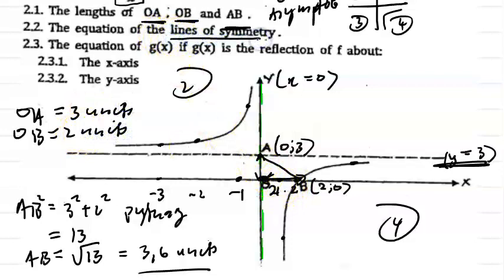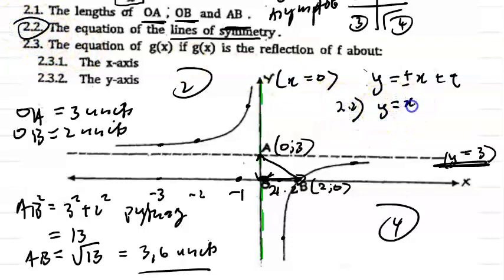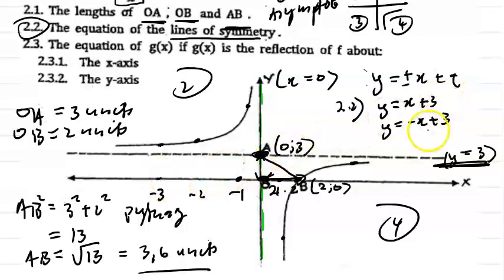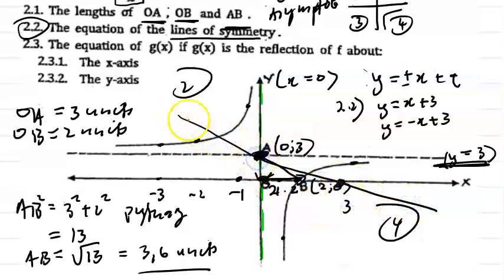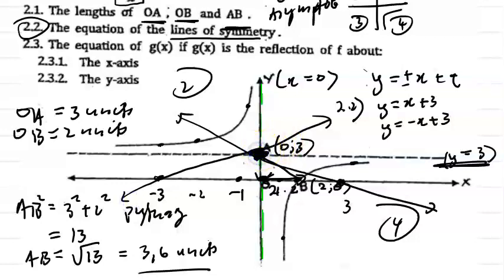Now they want the equations of the lines of symmetry. For a hyperbola in this form, the lines of symmetry are y equals plus or minus x plus q. So for this question, the two lines of symmetry are y equals x plus 3 and y equals minus x plus 3. Remember, your lines of symmetry go through the intersection of the asymptotes. One line has a positive gradient and the other a negative gradient.